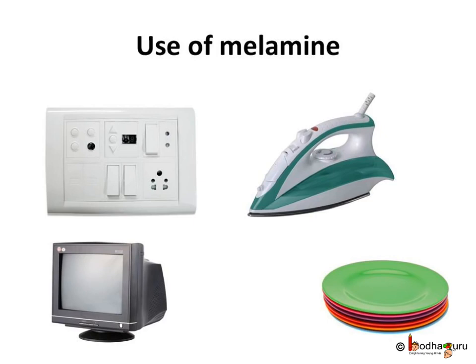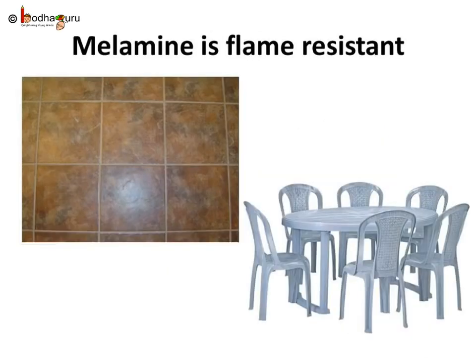Melamine is used to make utensils, dinnerware, containers etc. Melamine is flame resistant and can tolerate heat better than other plastics. Hence it is used to make flooring, furniture, fabric etc.